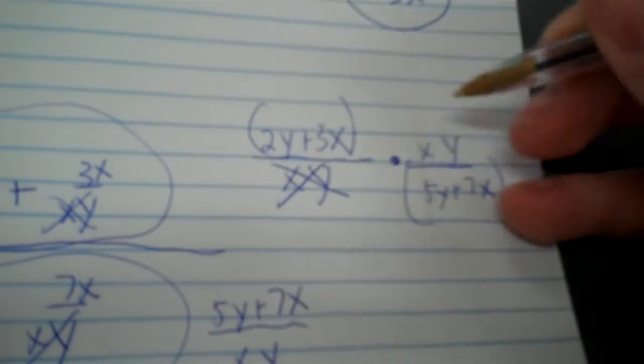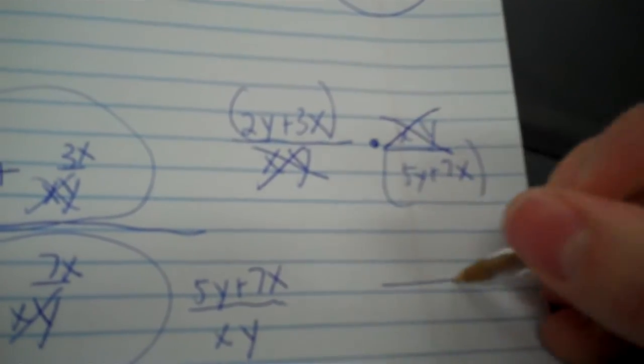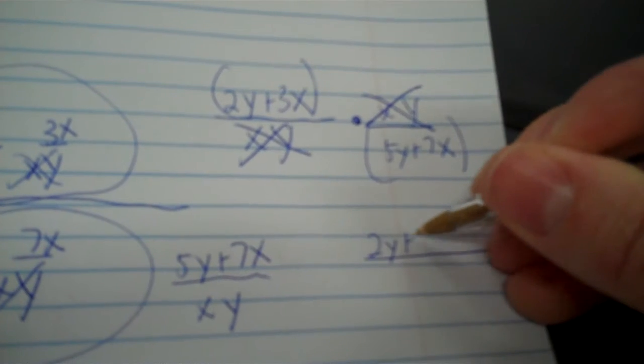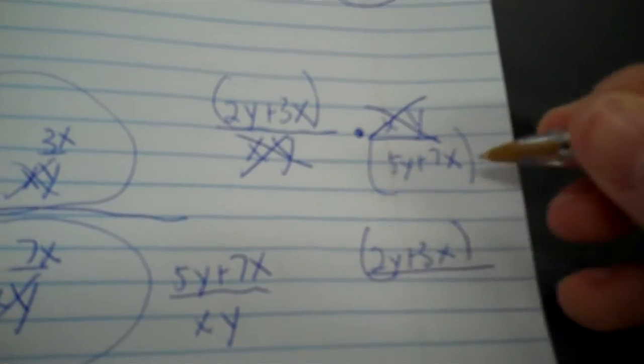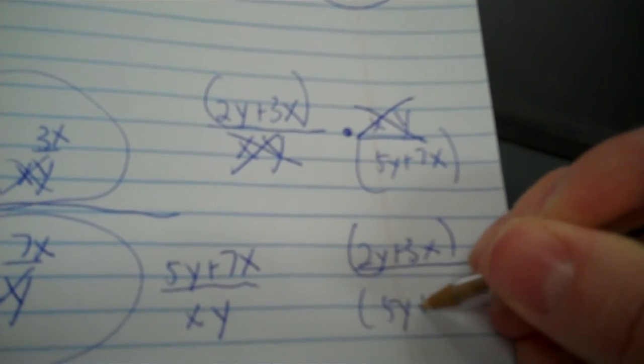Then put parentheses around your plus. And then you can cancel out the x, y. And we now have two y plus three x over five y plus seven x.